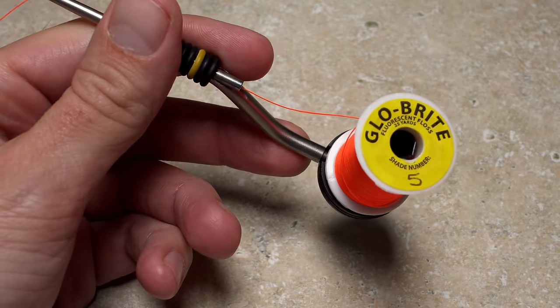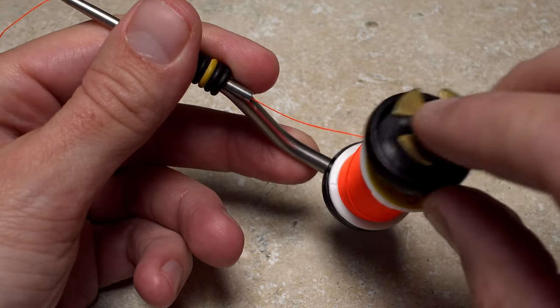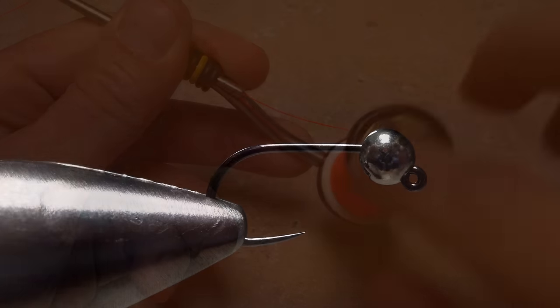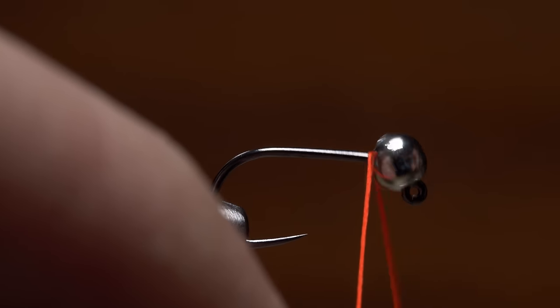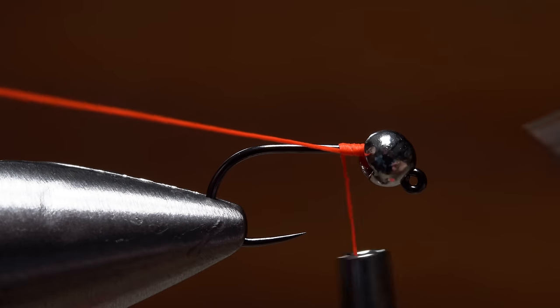After getting the assembly secured in the jaws of his tying vise, he loads a bobbin with a spool of orange glow-bright fluorescent thread. Start your thread on the hook shank immediately behind the bead, and take a few wraps rearward before snipping off the tag.